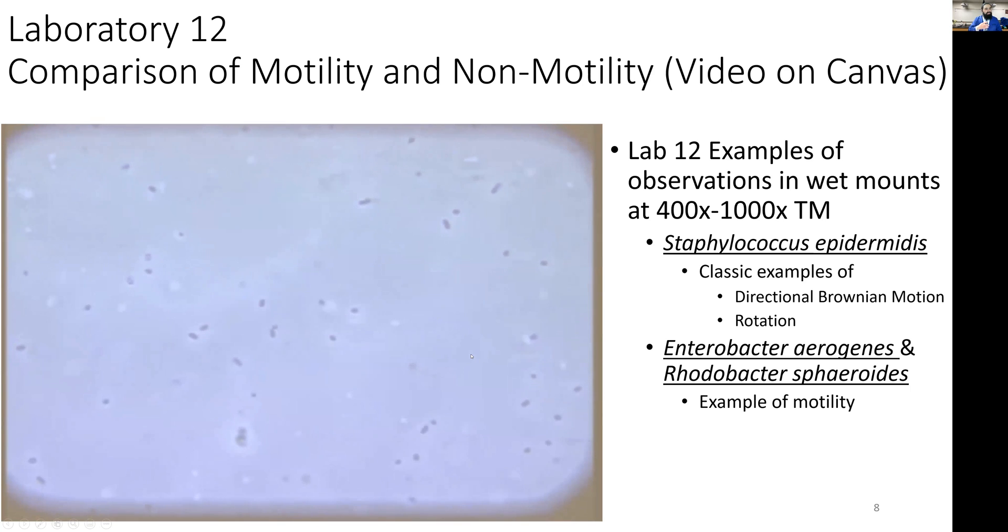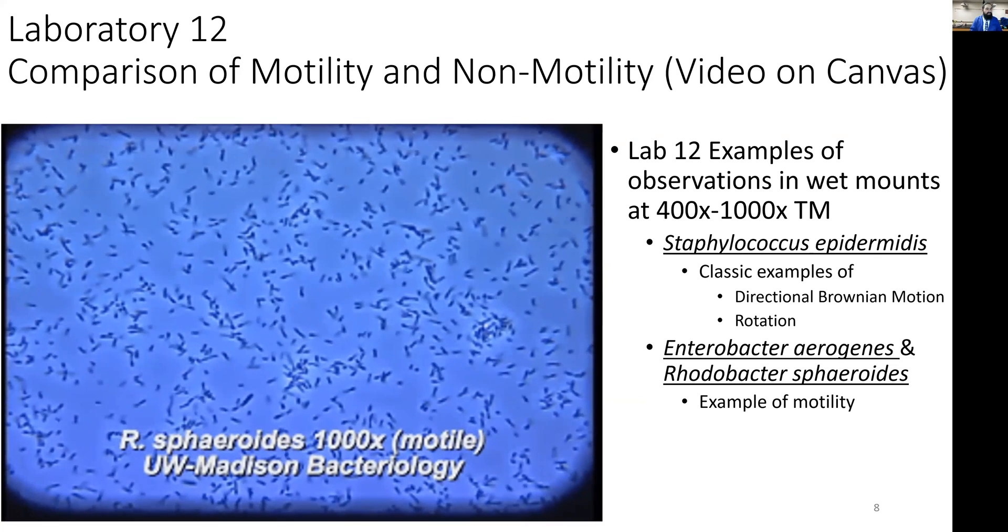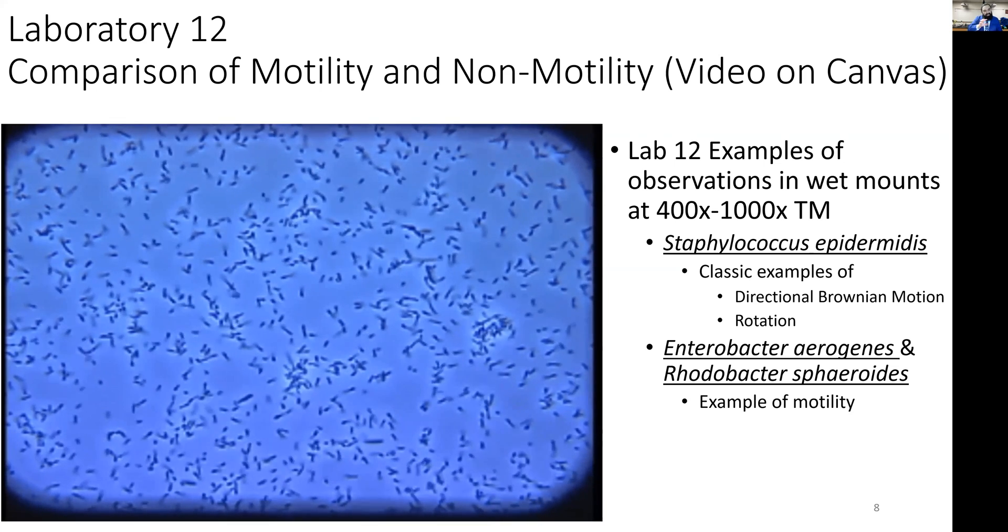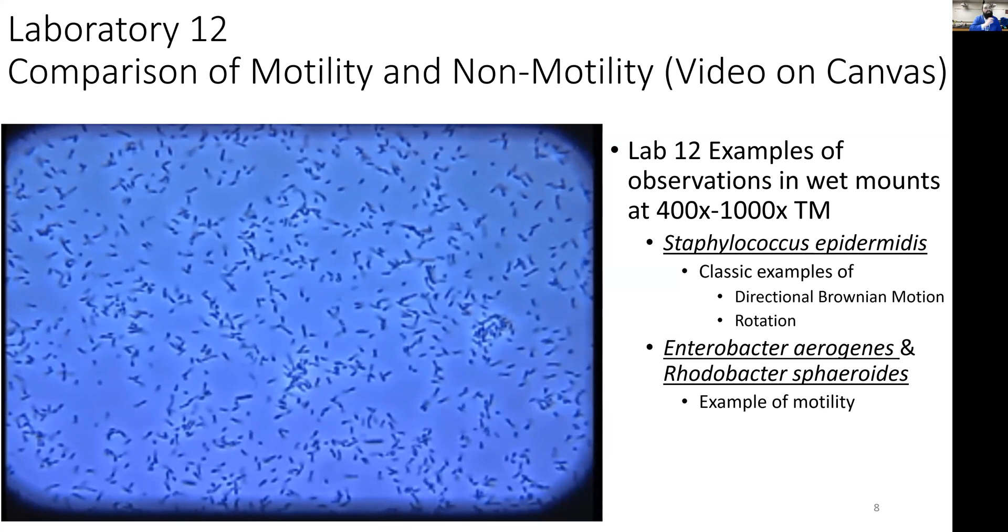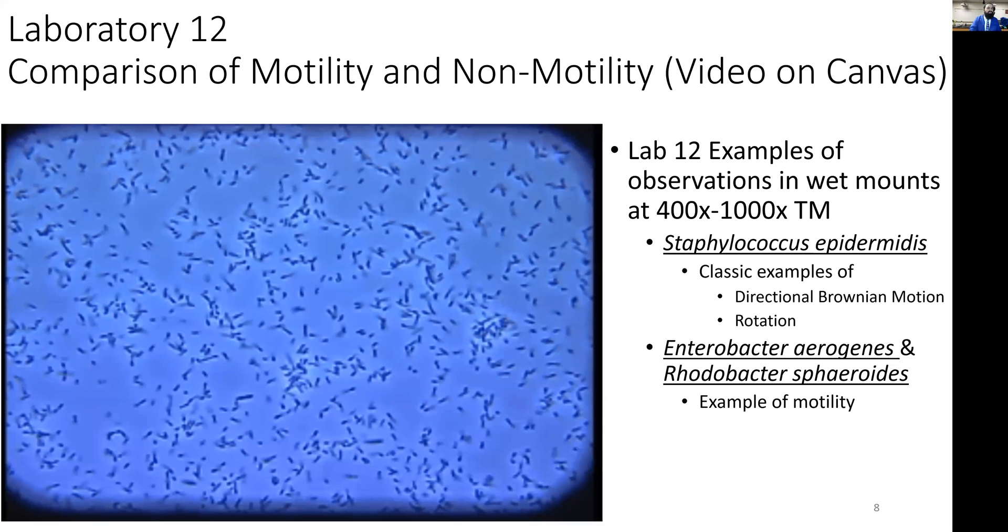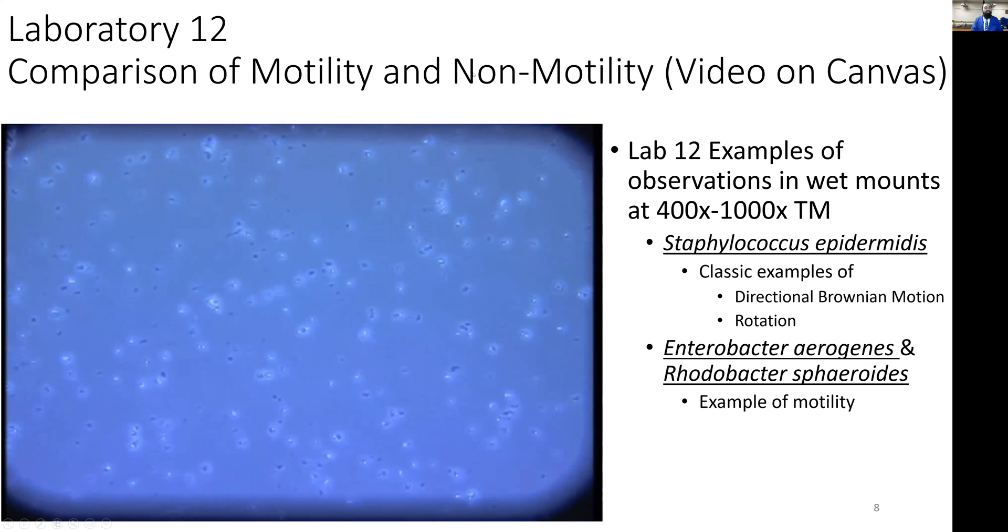Here's one more organism demonstrating true motility—Rhodobacter spheroides. Again, you see a little Brownian motion back and forth, but you can see individual cells moving around. Notice most organisms are relatively stable, but then you see individual cells truly, purposefully moving from point A to point B, spinning in place sometimes or changing directions and moving around everywhere. That's what we're trying to achieve under lab 12.